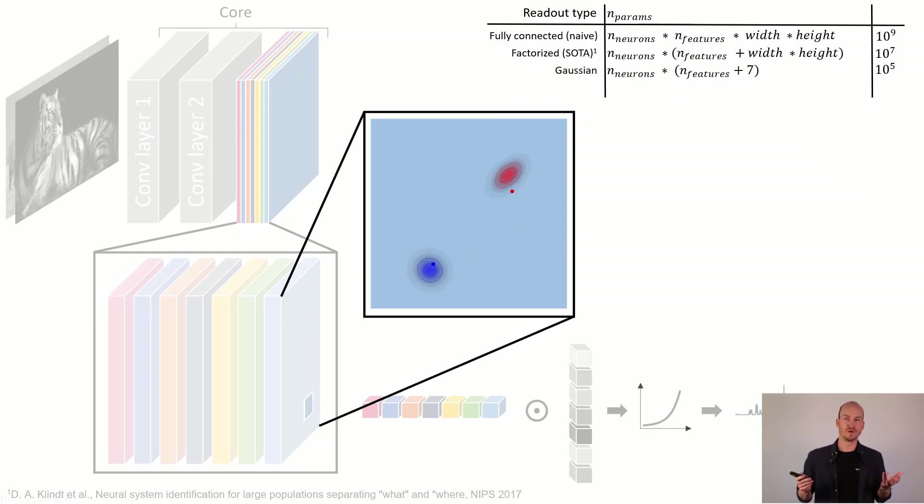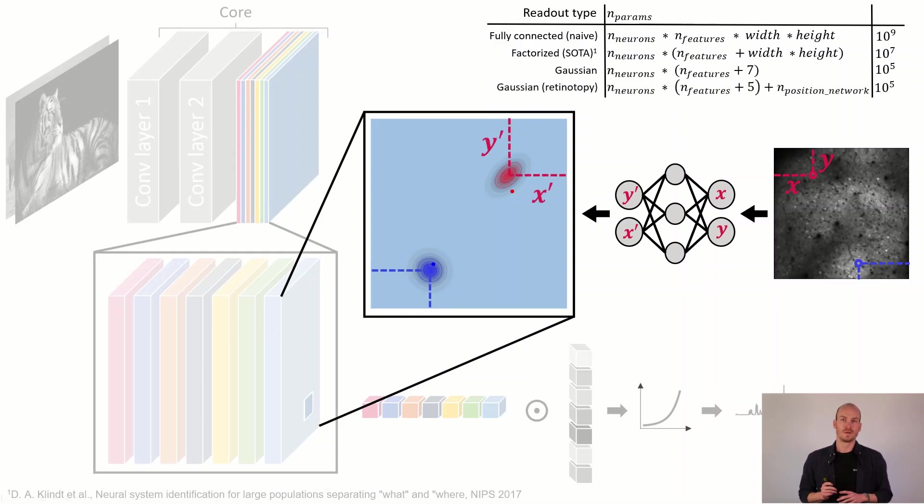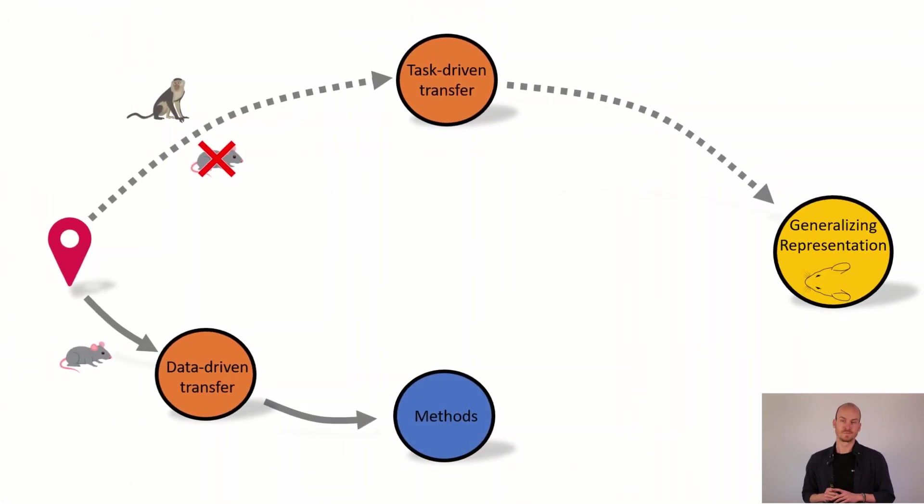Now we have even another invention for this readout. Remember that we have the cortical positions of our neurons. We can use these and making use of retinotopy we can predict the positions where the neurons are looking at. Because retinotopy states that neurons that are close together in space in cortex also look at positions in visual space that are close together. Now we arrive at another reduction of number of parameters and our neurons can inform each other about where they should look at.